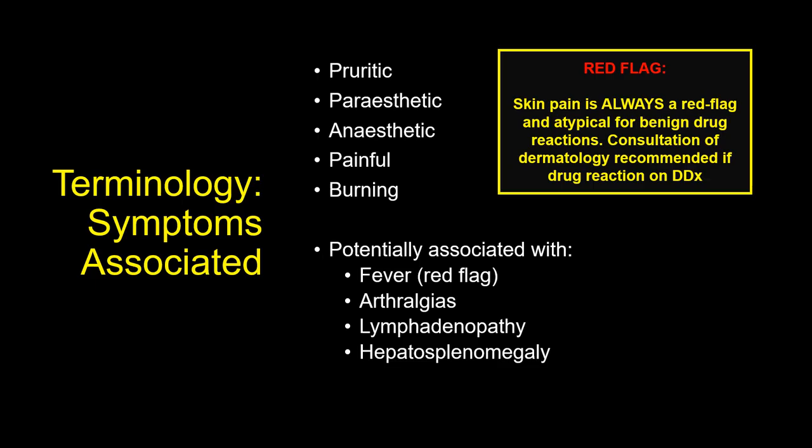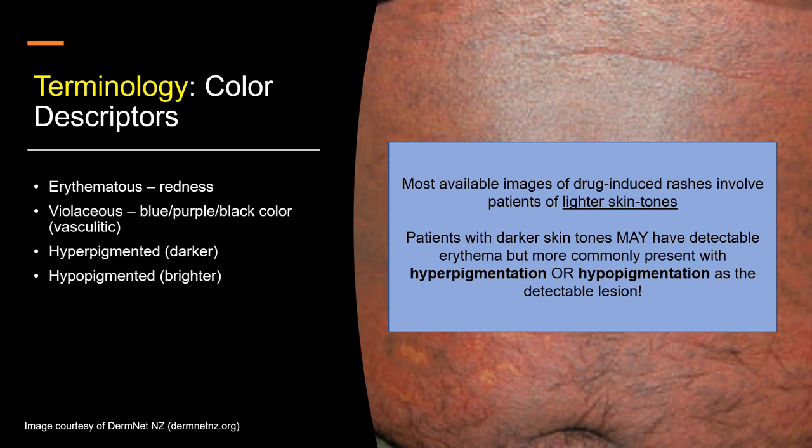The symptoms associated with the rash can be distinct clues to the syndrome — namely if the rash is pruritic versus non-pruritic, if it involves an anesthetic or parasthetic component, or if it is painful. A rash associated with pain should be considered a red flag, typically involving more severe syndromes. Some rash syndromes are also associated with joint or visceral involvement. Although most rashes are erythematous, violaceous or hypo/hyperpigmented rashes may be a clue to the syndrome. Consider how the baseline skin tone of your patient may complicate your color assessment, as patients with darker skin tones may show more of a hyperpigmented component.